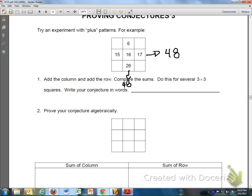Now it says to prove your conjecture algebraically, kind of like we did in class. Well, if this is my first number on the top left corner, my next number is going to be n plus 1. And this next one is going to be n plus 2.